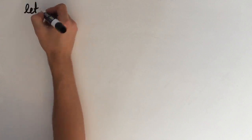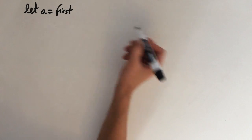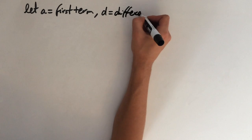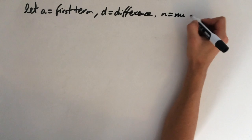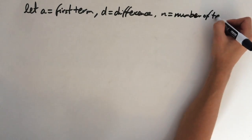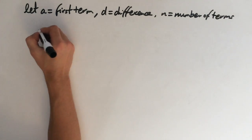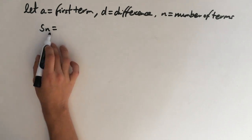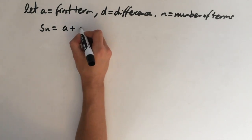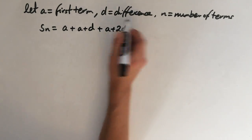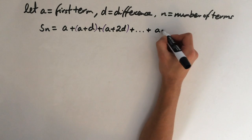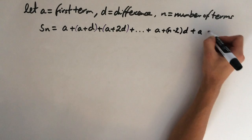Now let's generalize it. We define: a equals the first term, d is the common difference, and n is the number of terms. Our general arithmetic series S(n) equals: first term a, second term a plus d, third term a plus 2d, and so on all the way up to the second-to-last term a plus (n minus 2)d, plus the last term a plus (n minus 1)d.